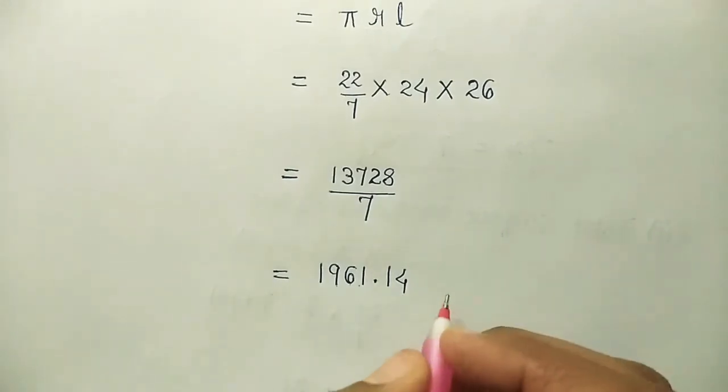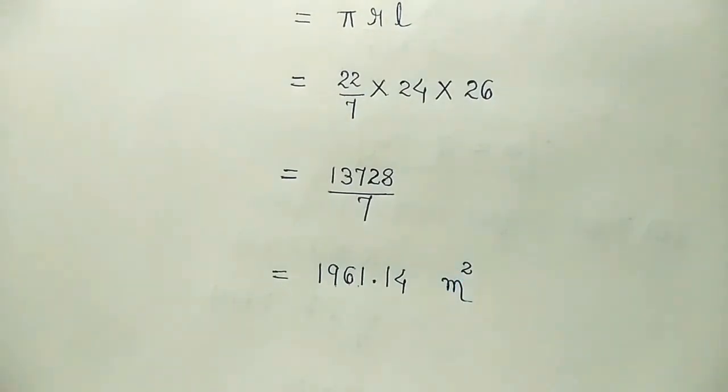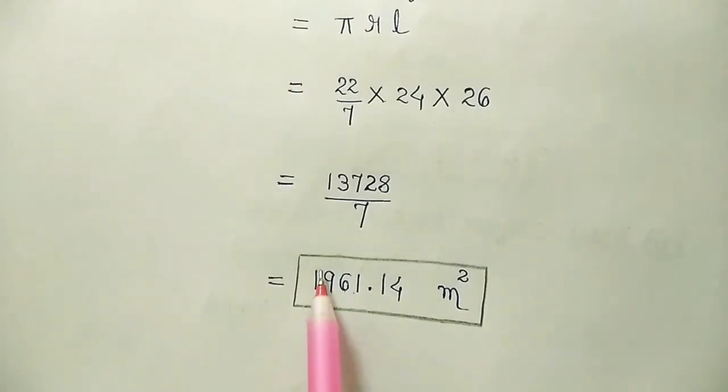This is what? Area. So it will be in meter square. As this is area, we have to find cost. So we'll write cost for 1 meter square is Rs 70. So for this much area how much it is.